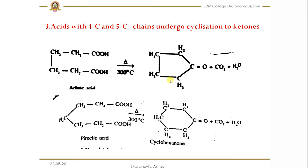By the cyclization, we get the corresponding ketones. You can see the five-carbon ring with a carbonyl group — this is called cyclopentanone. Similarly, if we have pimelic acid, which has five carbons in between the two carboxylic groups, when heated at 300 degree Celsius it forms cyclohexanone. These are very simple and easy reactions to recall.